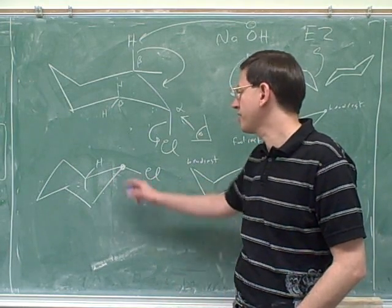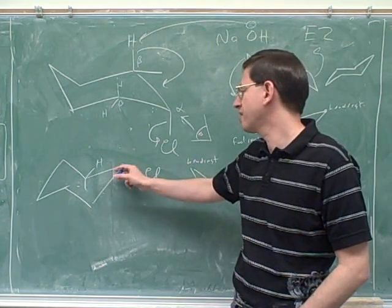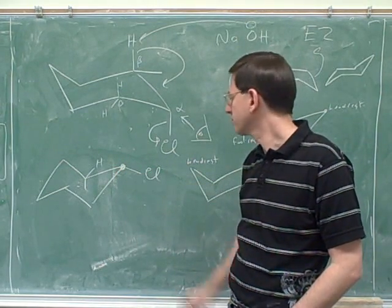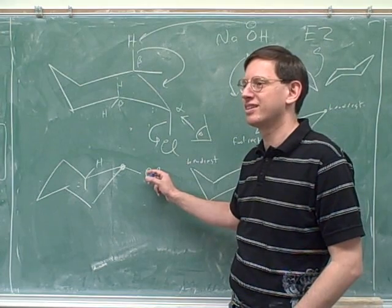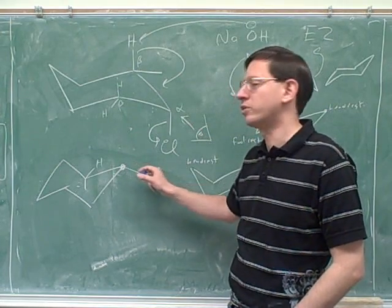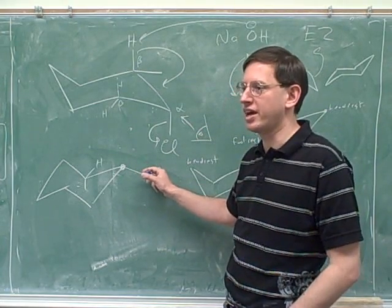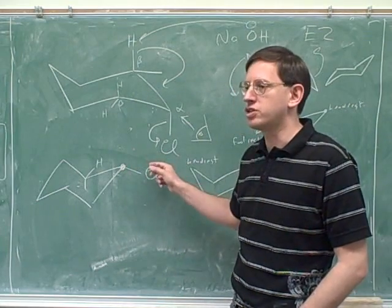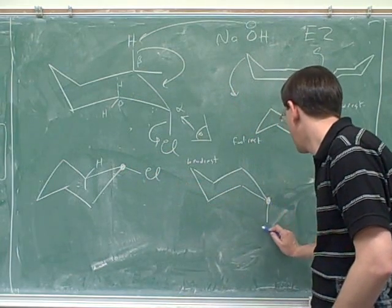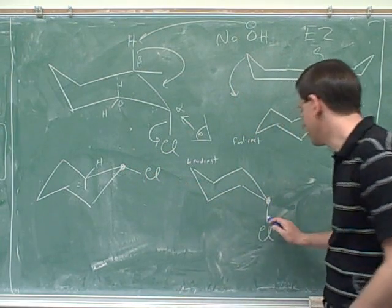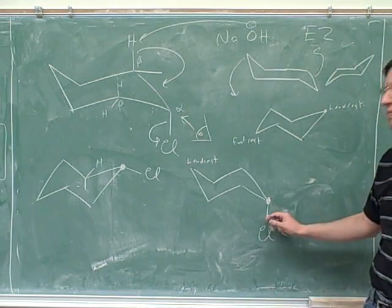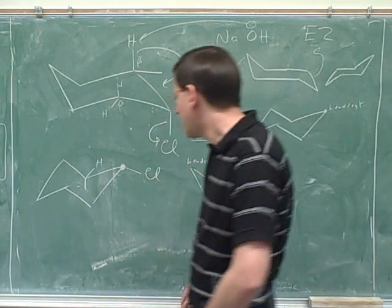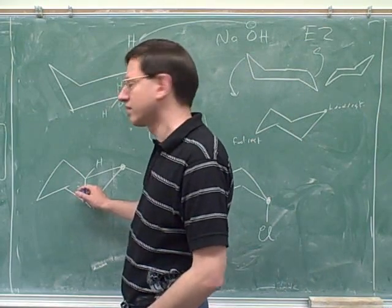The chlorine is not pointing straight up or straight down, but is it pointing kind of up or kind of down? The chlorine is pointing down — not straight down, but kind of down. Up and down doesn't change when you do chair flips, so the chlorine here would be pointing down. Here's the down position on the footrest.